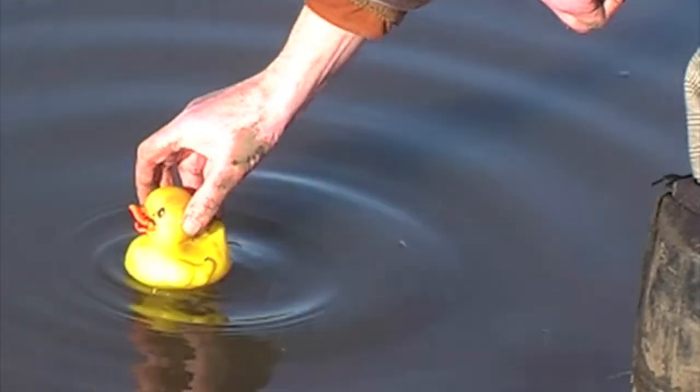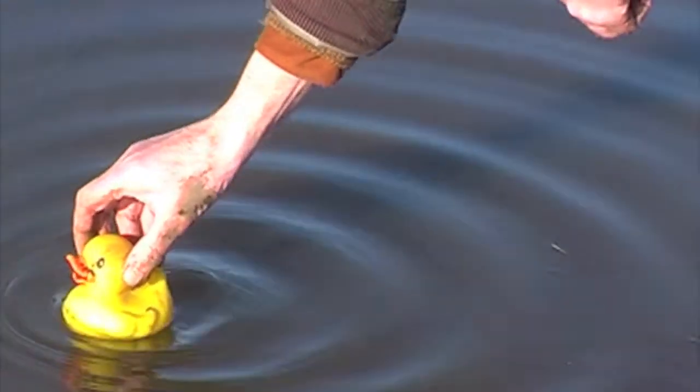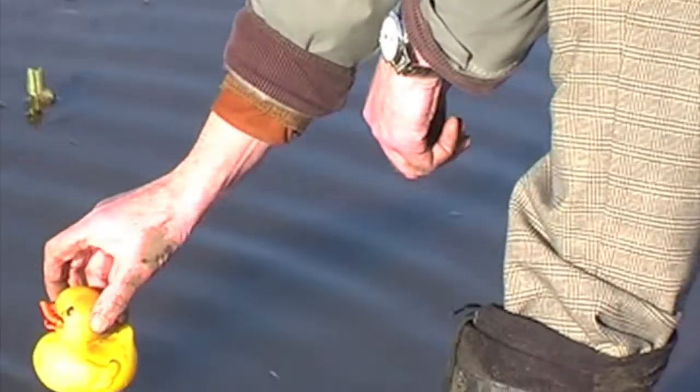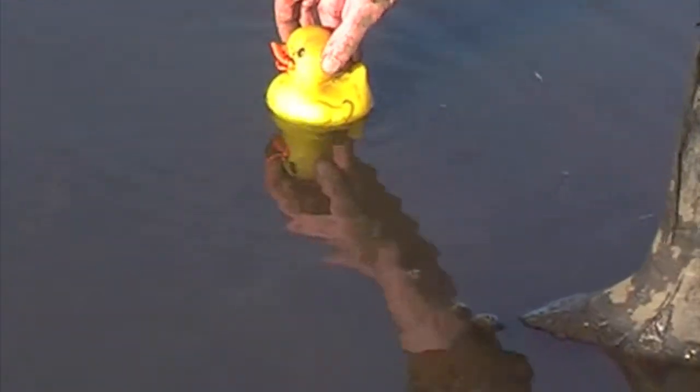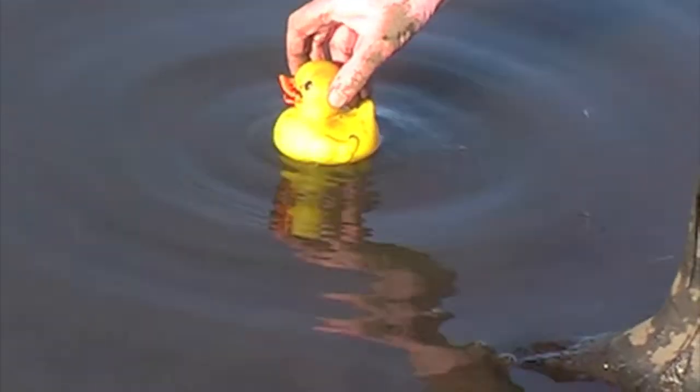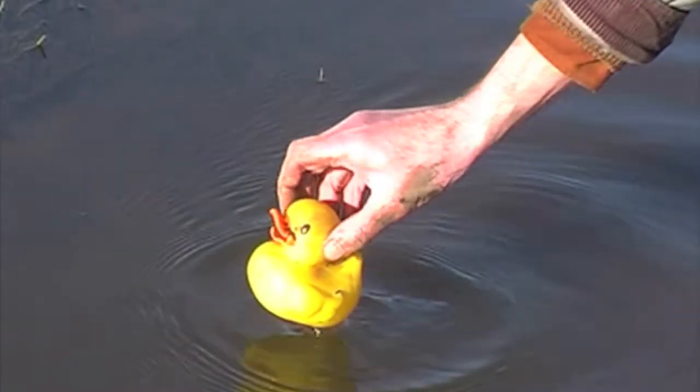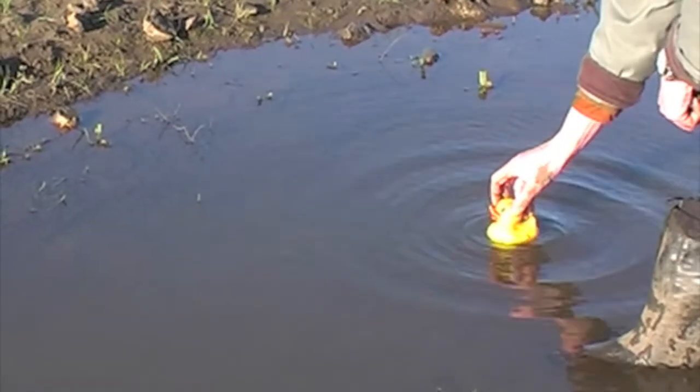A duck paddling in the water will make waves all around it. As it paddles forward, each new wave is made in a slightly different place to the one before. As a result, the waves in front of the duck seem to be bunched together, and those behind it seem to be stretched out.